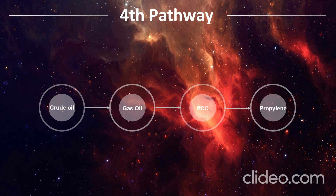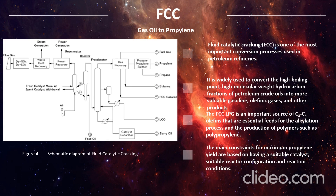For the last pathway, from crude oil we produce gas oil, which undergoes FCC to produce propylene. FCC, or fluid catalytic cracking, is one of the most important conversion processes in petroleum refineries. It is widely used to convert high-boiling-point, high-molecular-weight hydrocarbon fractions of petroleum crude oils into more valuable gasoline, olefinic gases, and other products. The FCC off-gas is an important source of C3–C4 olefins essential for the alkylation process and the production of polymers such as polypropylene. The main constraints for measuring propylene yield are the suitable catalyst, reactor configuration, and reaction conditions.